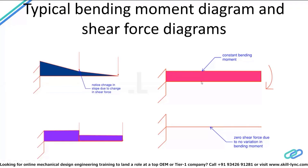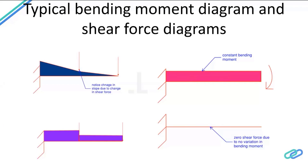If you have a cantilever beam subjected to a concentrated moment at the free end, along the entire beam you have a constant bending moment. Since the moment is fully constant, there is no variation of moment along the length — the derivative dM/dx equals zero — and that's why there is no shear force developed in the beam.